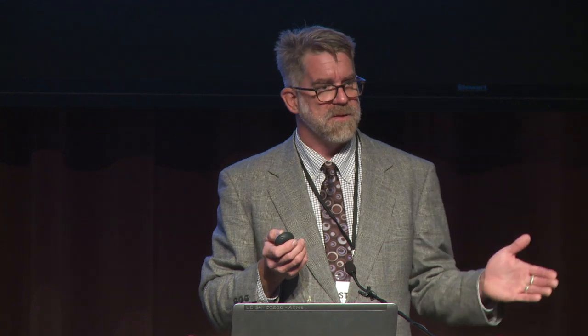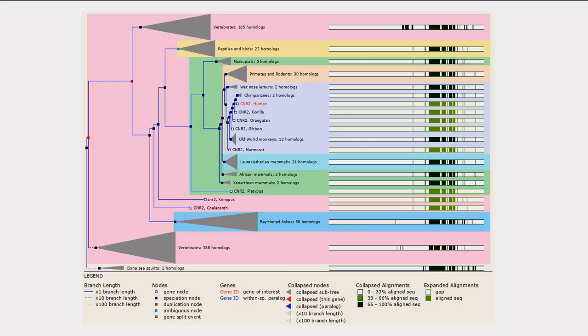The first study I could pull up on the evolutionary biology of the endocannabinoid system was from the year 2000, then really nothing until 2005, then 2007. You could count on both hands the number of published articles on the evolution of the endocannabinoid system.